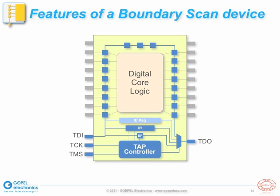One optional device register defined in IEEE 1149.1 is the 32-bit ID register, which can be used to identify the device type and manufacturer. If the ID register is implemented, the device must also feature the optional IDCODE instruction.